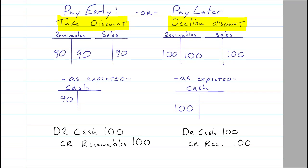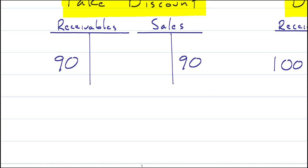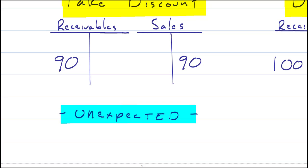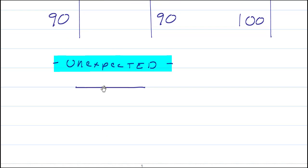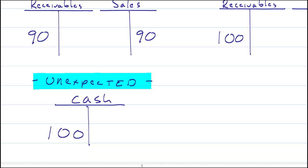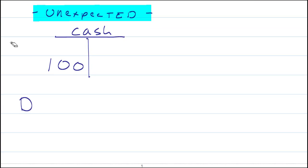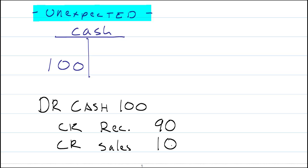Let us look at the trickier option when the customer does the unexpected thing. In the first option, we expected our customer to pay early. Now, if they pay later, we will collect $100 in cash — so that is a debit to cash of 100. However, we can only credit receivables 90 to close their account. Now we have another 10 remaining, so we credit sales with that balancing figure of 10, putting our revenue back to 100. So we debit cash, credit receivables, with the balancing figure going to sales.